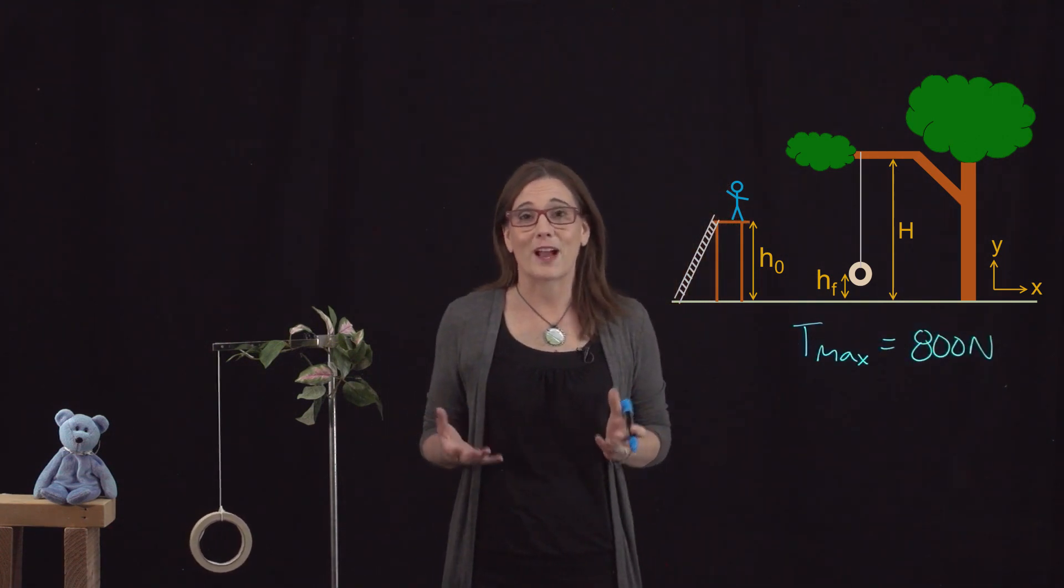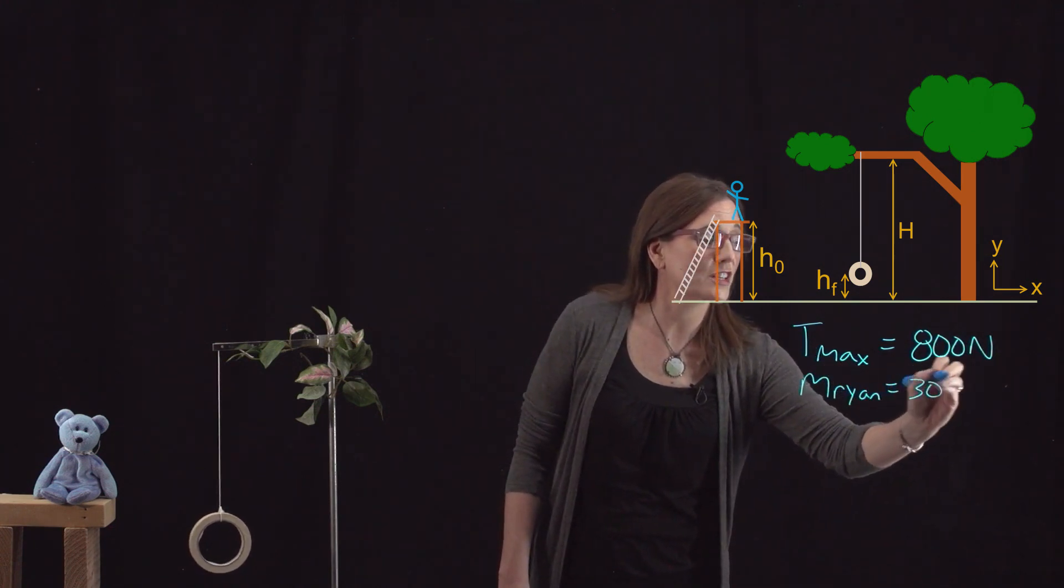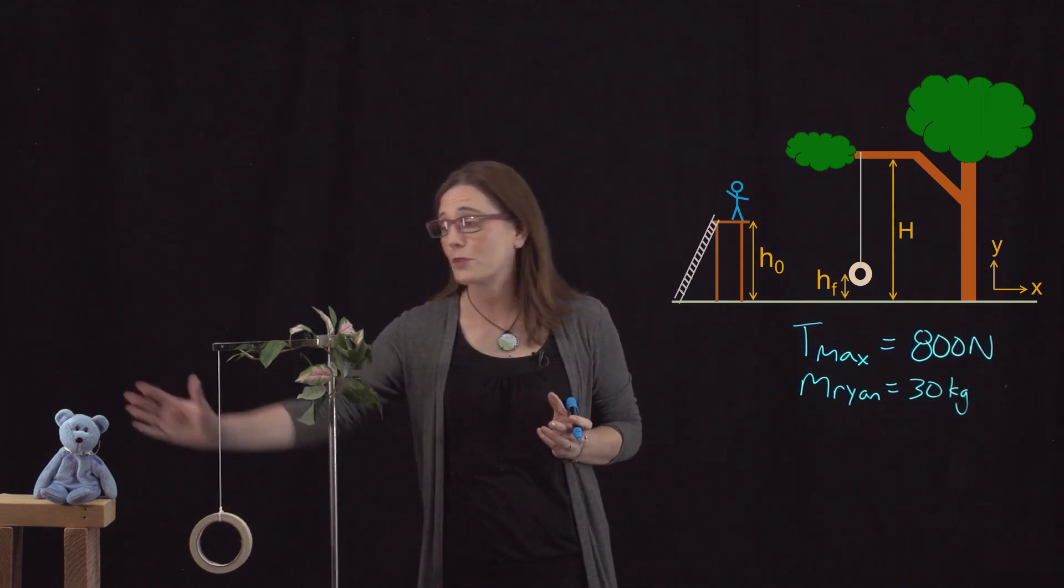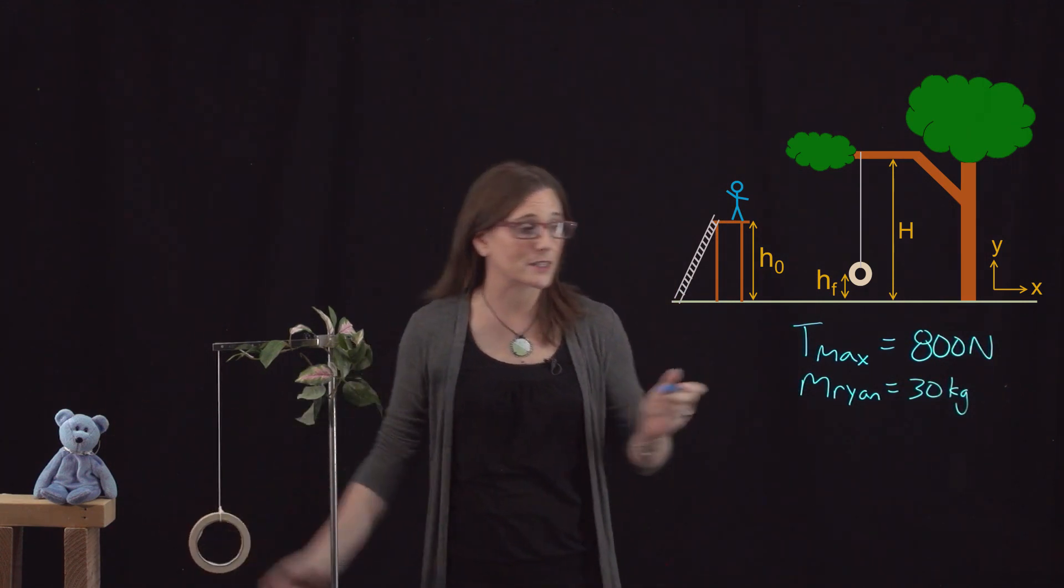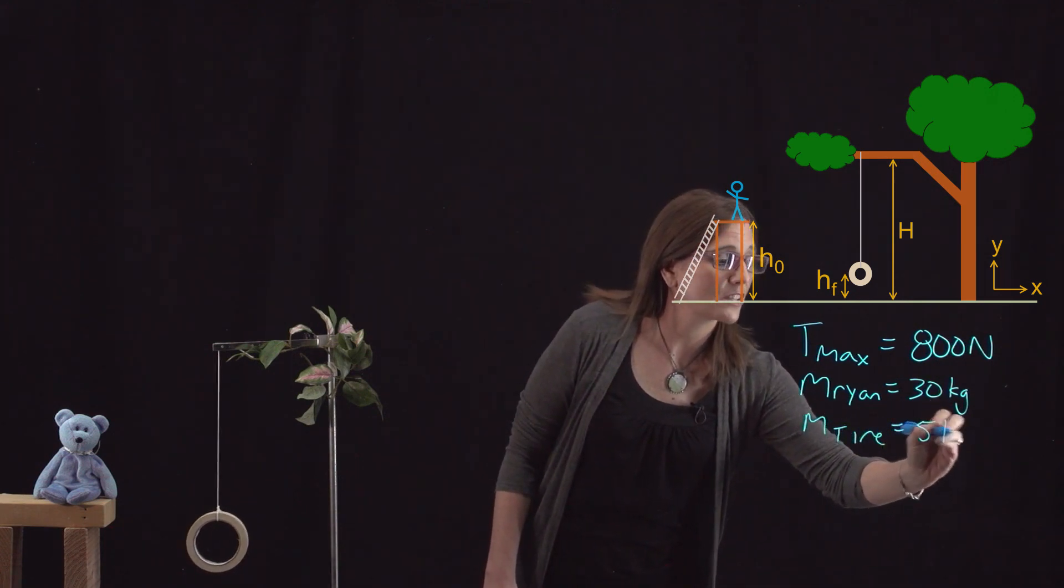You then ask around, and you figure out what Ryan's mass is. So Ryan's mass is 30 kg, and the mass of the tire, which you also need because the tire and Ryan swing together, is 5 kg.